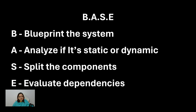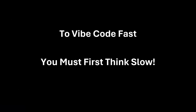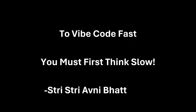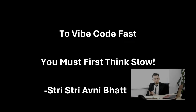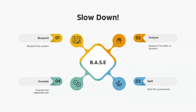You must be thinking that vibe coding is supposed to be fast and efficient — why do I need a checklist for that? A wise person once said that to vibe code fast, you must first think slow. BASE is the framework that slows you down before you start firing off prompts to your AI tools. It gives you clarity — it might take five minutes upfront but it saves you hours of re-prompting later.